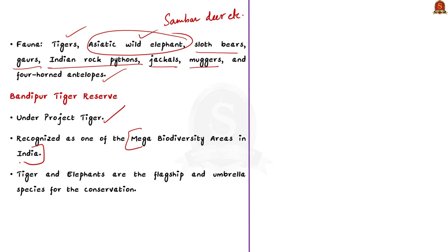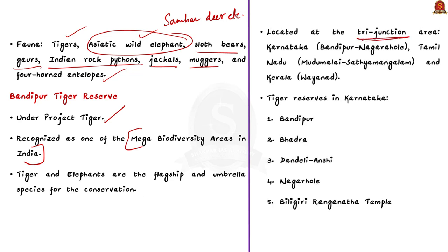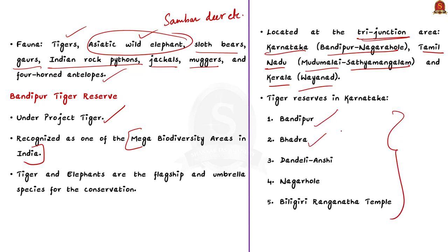The Tiger Reserve occupies a unique position at the confluence of the Western and Eastern Ghats, and also occupies a tri-junction area of the states of Karnataka, Tamil Nadu and Kerala. The Bandipur, Nagarahole, Wayanad, Mudumalai and Sathyamangalam Tiger Landscape are spread across these three states. Karnataka has five tiger reserves: Bandipur Tiger Reserve, Bhadra Tiger Reserve, Dandeli-Anshi Tiger Reserve, Nagarahole Tiger Reserve, and Biligiri Ranganatha Temple Tiger Reserve.